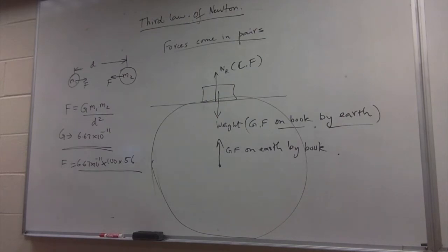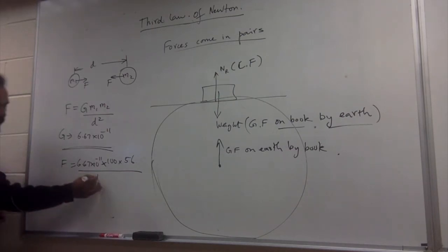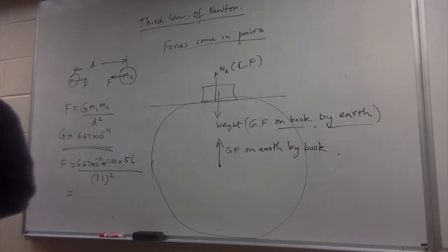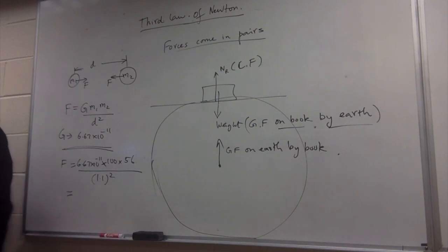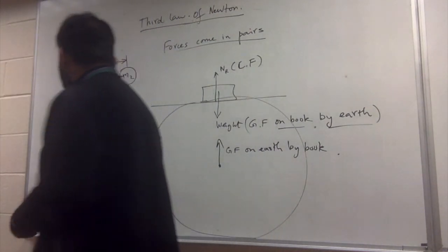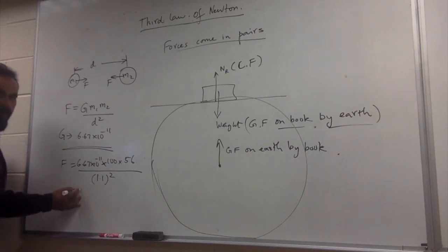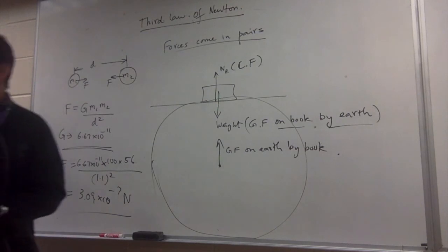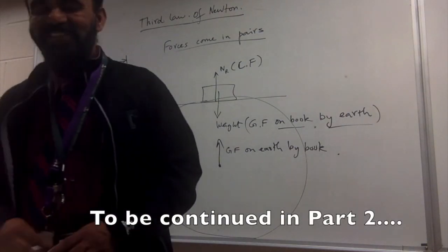So we calculate: F = 6.67 × 10⁻¹¹ × 100 × 56 / (1.1)². Gravitational force is the force between any two masses — it can be between you and the Earth or between you and a friend. The calculated value will be very small, which is why two people nearby don't noticeably pull each other.